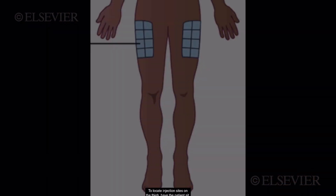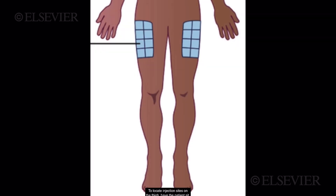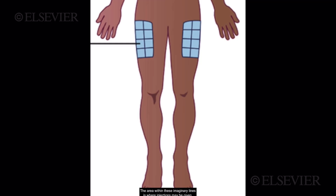To locate injection sites on the thigh, have the patient sit. Then draw an imaginary line above the knee and below the uppermost part of the thigh, then down the outer side and the center front of the leg. The area within these imaginary lines is where injections may be given — or think of it as the middle third of the lateral aspect of the upper leg.